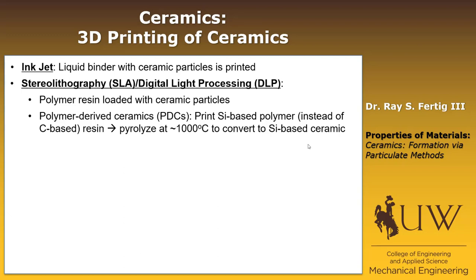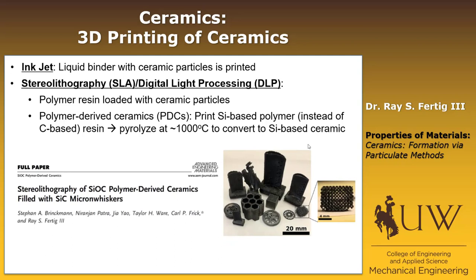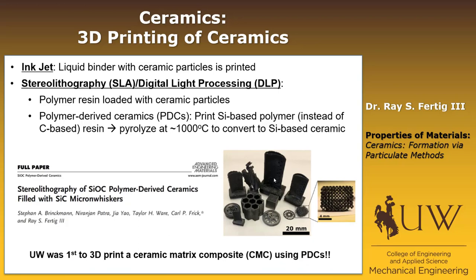My research group and Dr. Frick's research group were the first to 3D print a ceramic matrix composite using polymer-derived ceramics. You can see some of the things we printed: a gear, a hexagonal structure, a wheel, turbine vanes, a fine lattice structure, and a bucking horse representing Wyoming. All of these are 3D printed ceramics. It's not in your textbook, but UW was first to achieve this — not a mainstream production method, but certainly one you should be aware of given that you're here at UW.